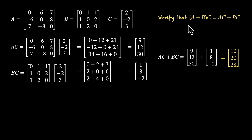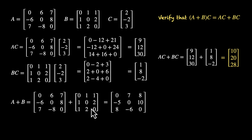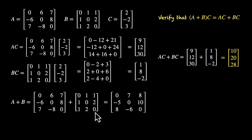Now let's find the left-hand side: (A + B) times C. First, let's find A + B by adding corresponding elements. A + B is: 0, 7, 8, minus 5, 0, 10, 8, minus 6, 0.